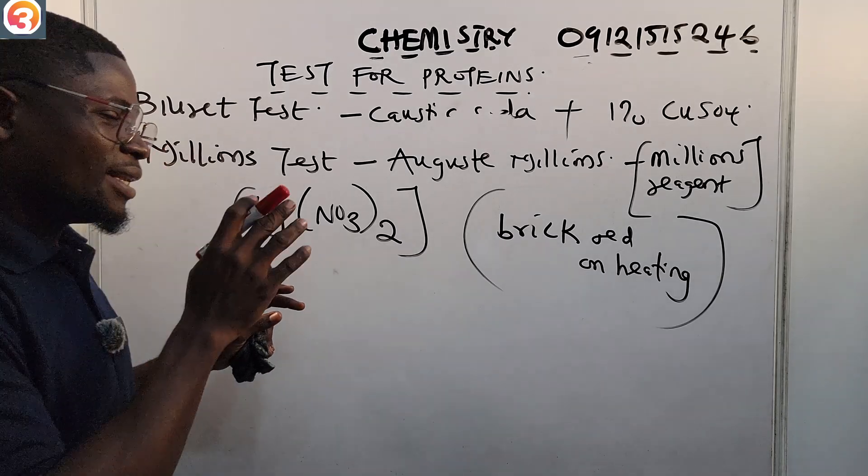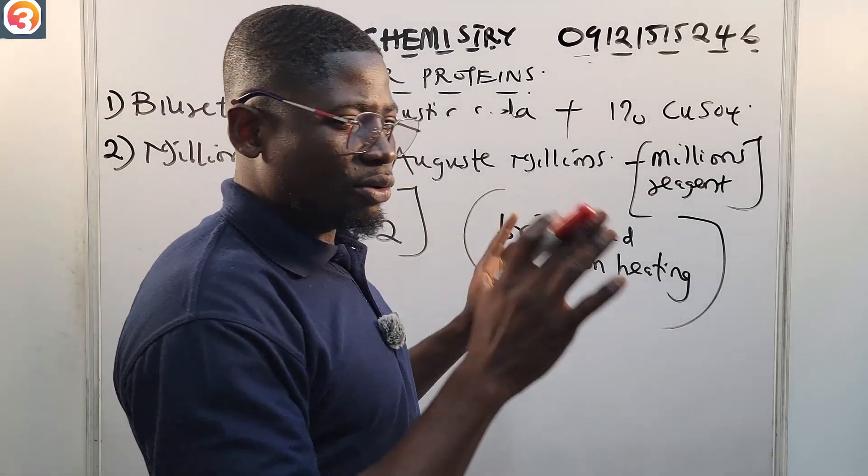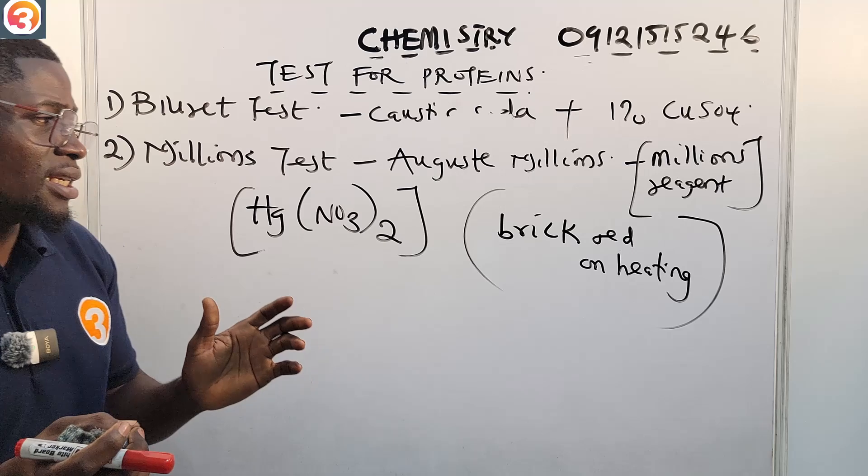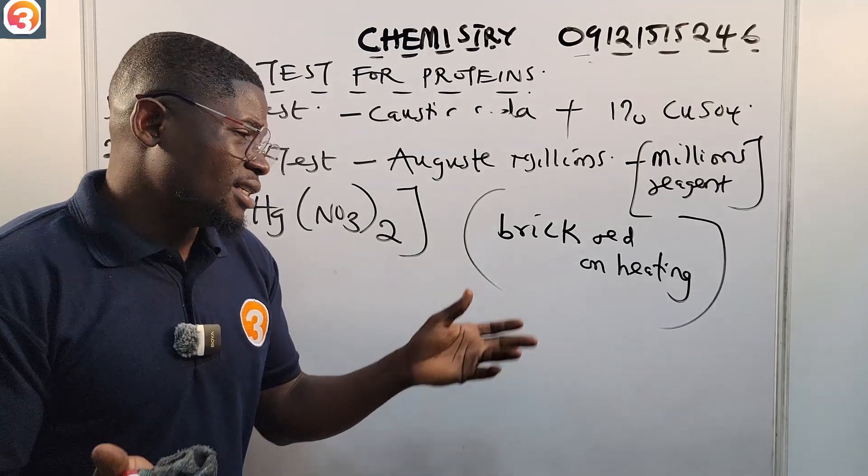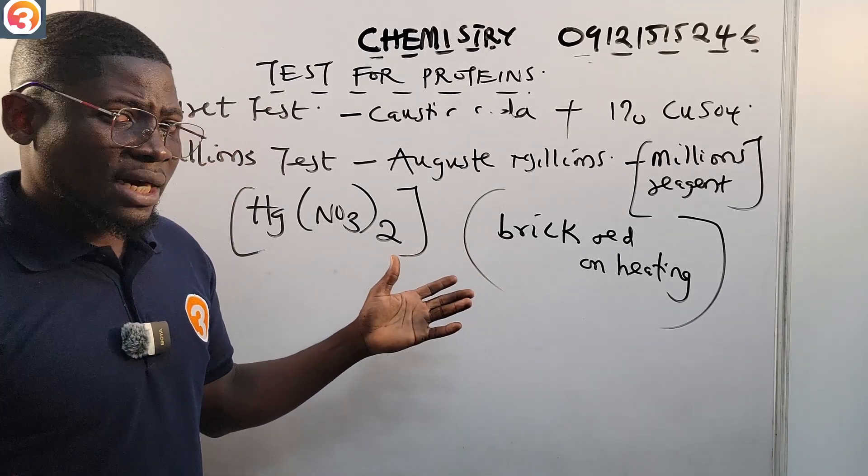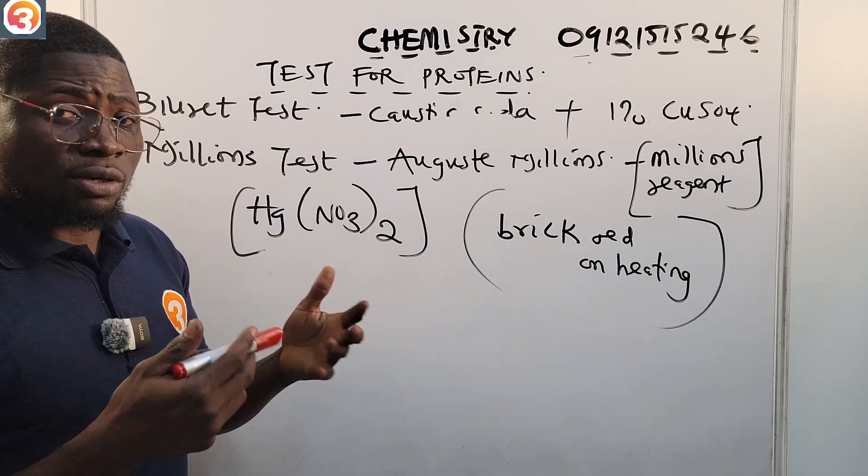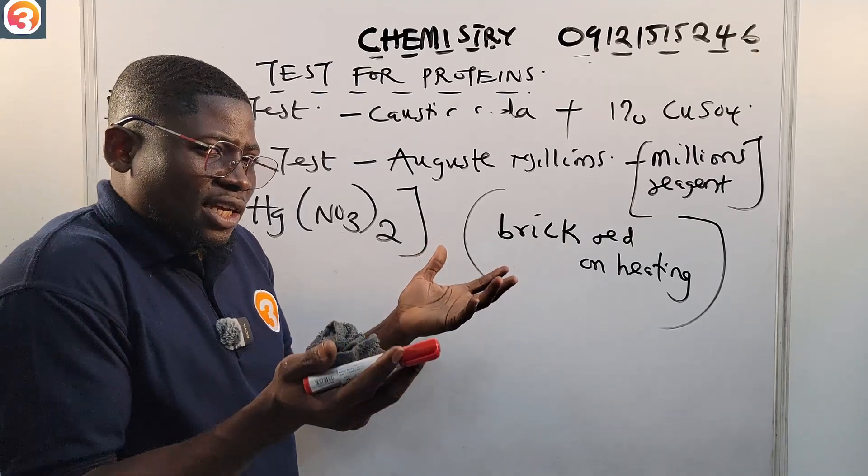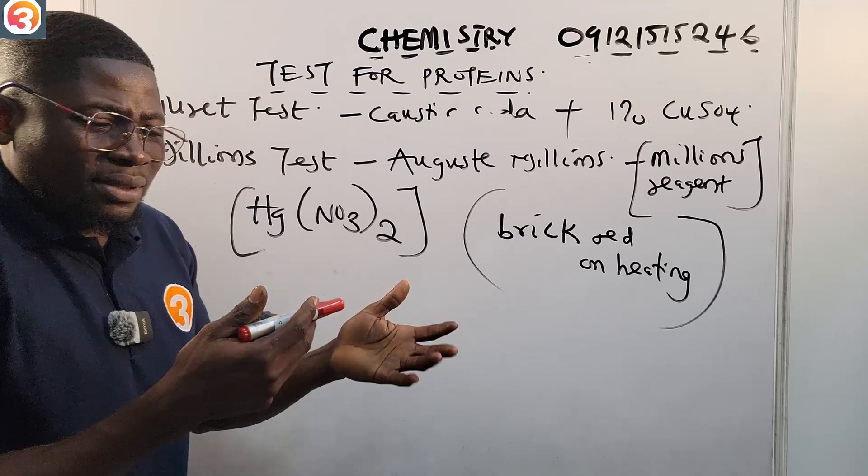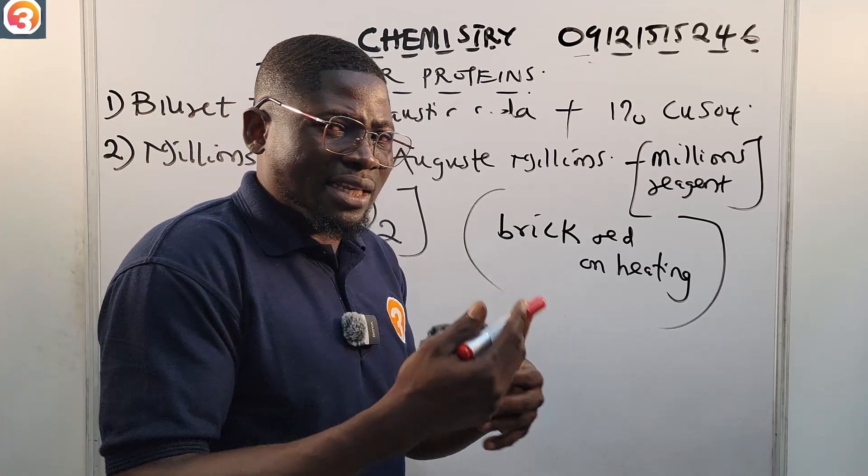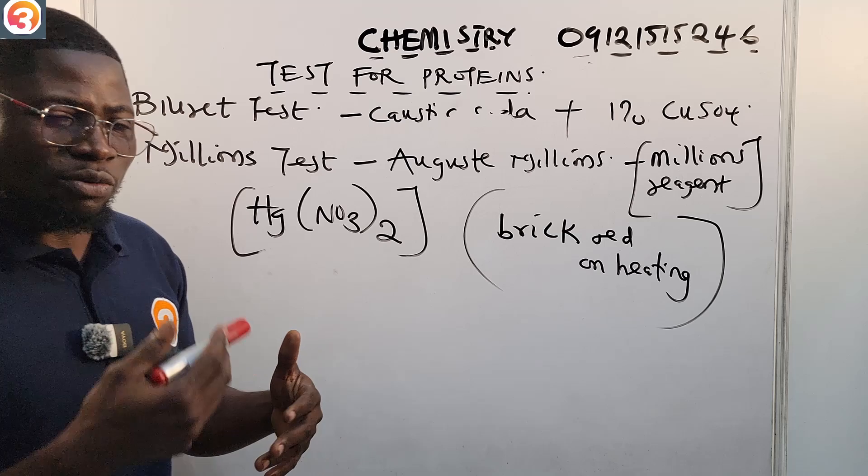We are going to observe a white precipitate which turns brick red on heating. On some protein substances it is immediate, the brick red you will observe it immediately, while for some other substances it is not immediate. Maybe to give you some time, you observe it as you heat it over time, you see that it is giving you this brick red precipitate.